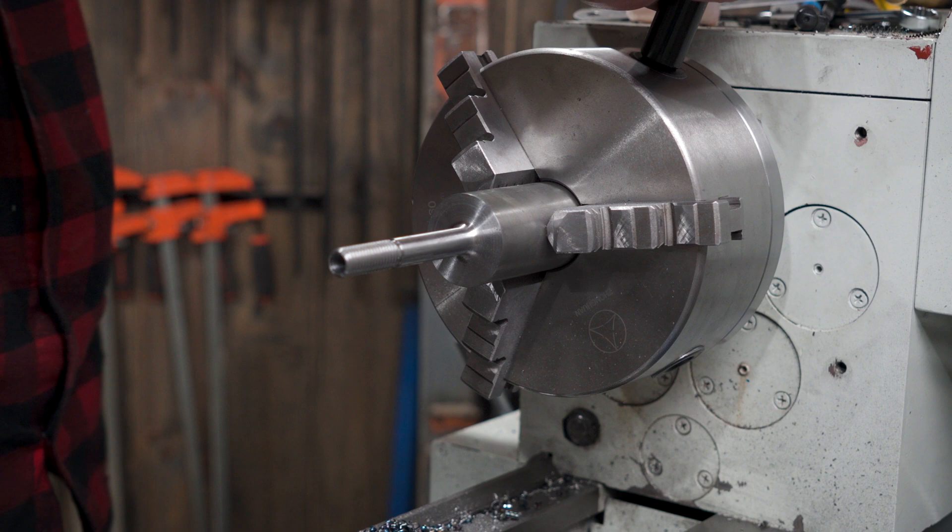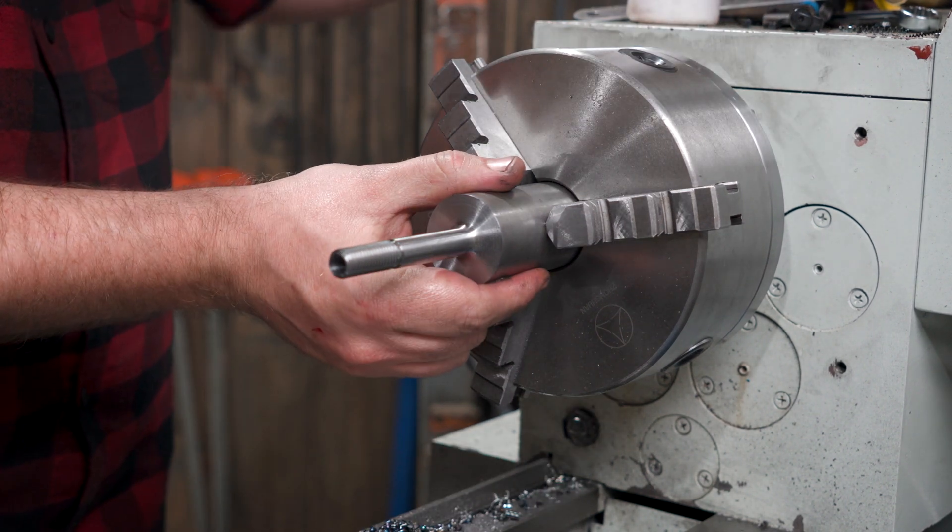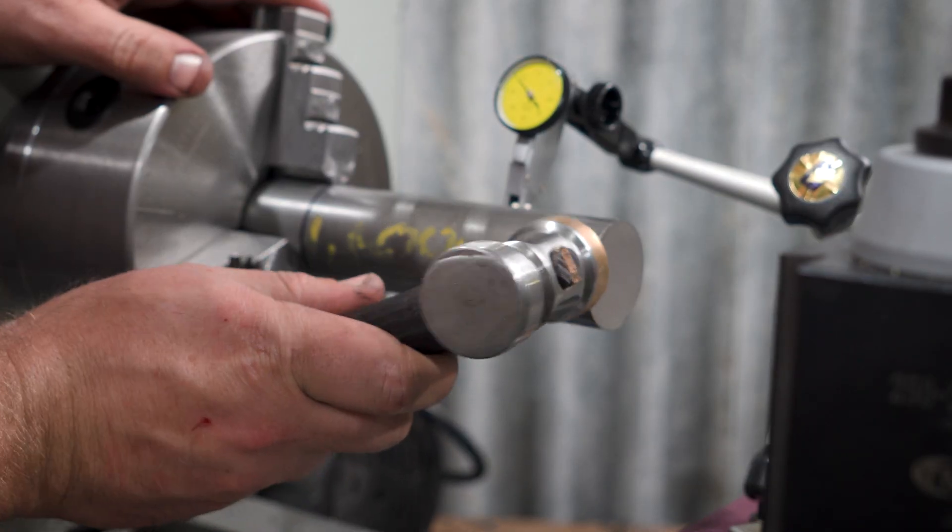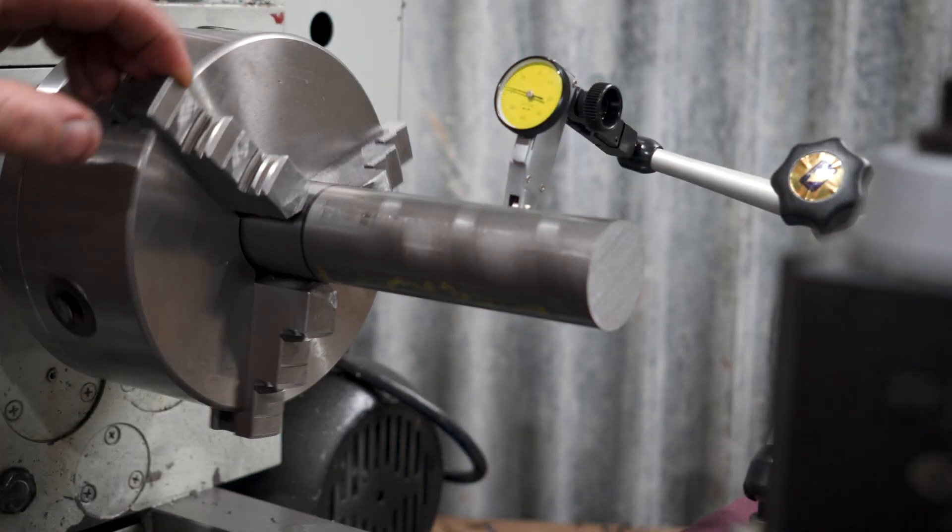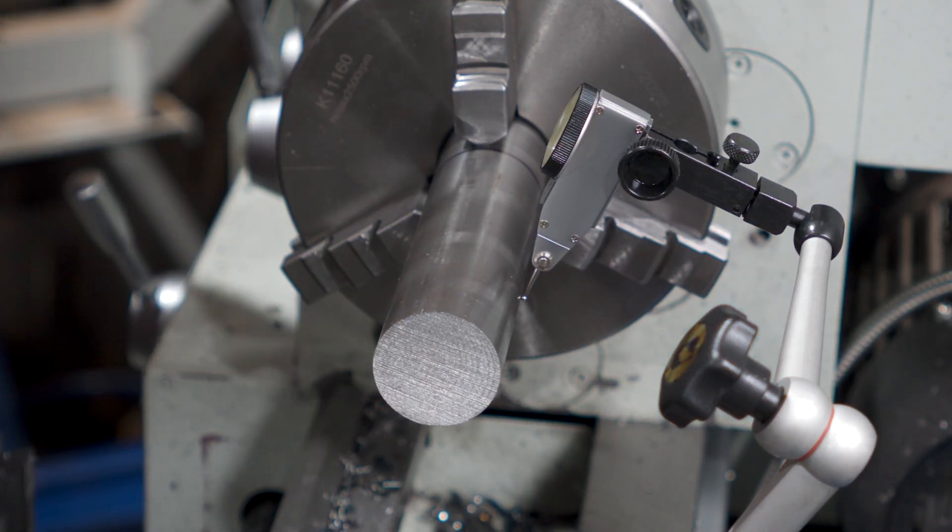So I can flip it in the chuck and kind of tap it true. I'm not trying to dial it into zero. I'm not too worried about concentricity between the handles. Just enough so nothing will look wonky later on.